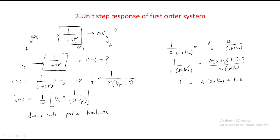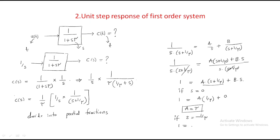To find A, we set s = 0: 1 = A·(1/τ) + B·0, so A = τ. To find B, we set s = −1/τ: the A term becomes 0, giving 1 = B·(−1/τ), so B = −τ.